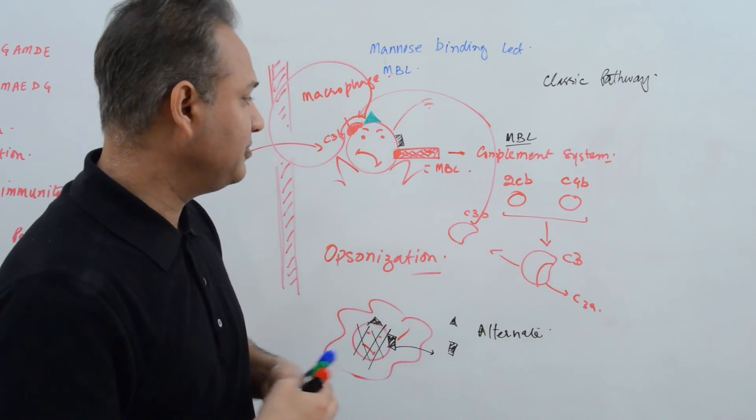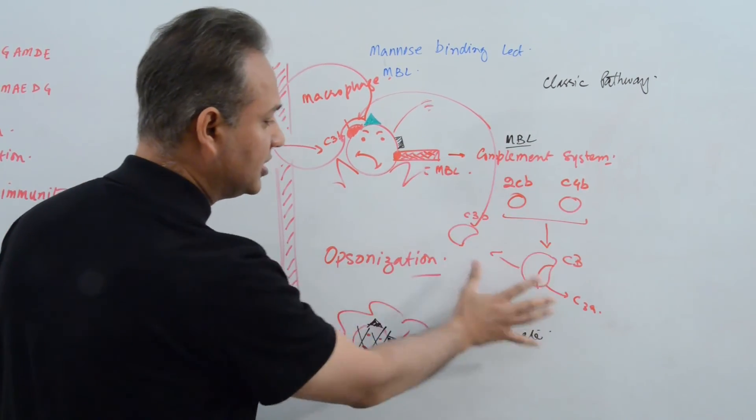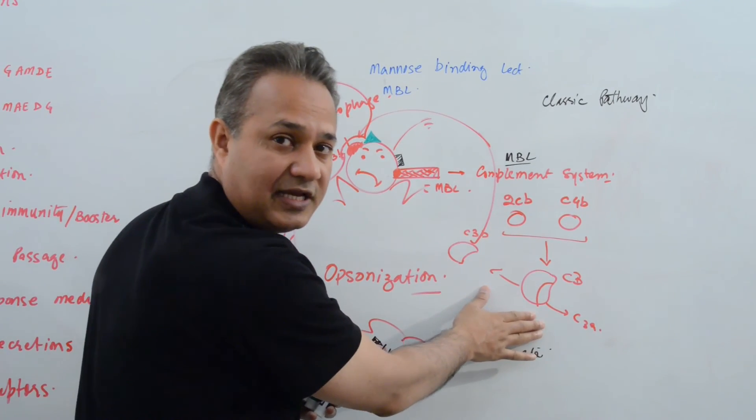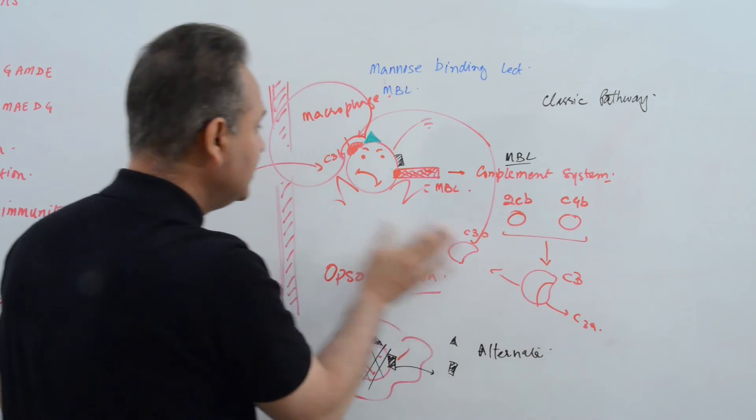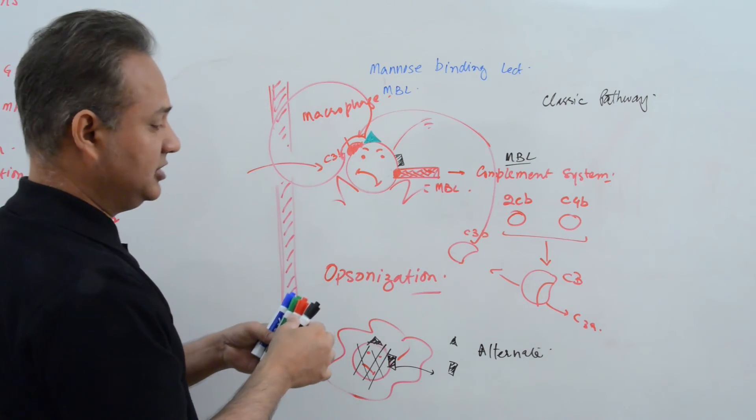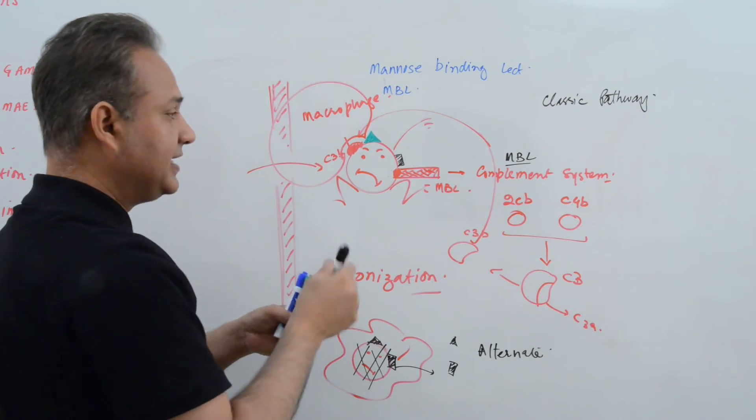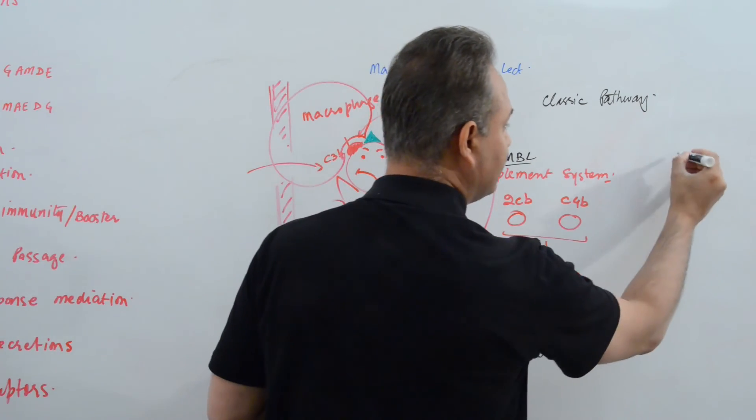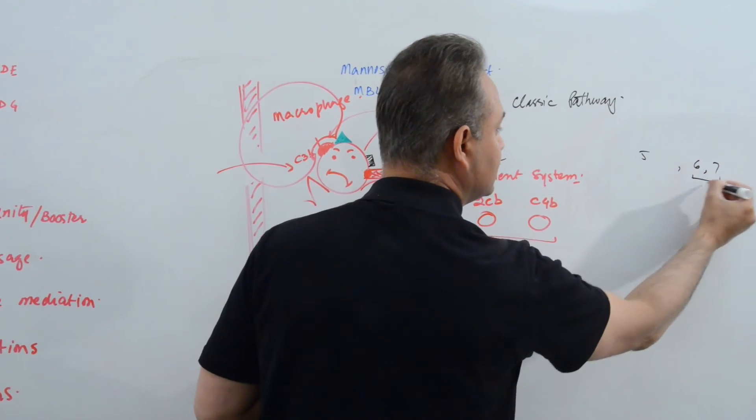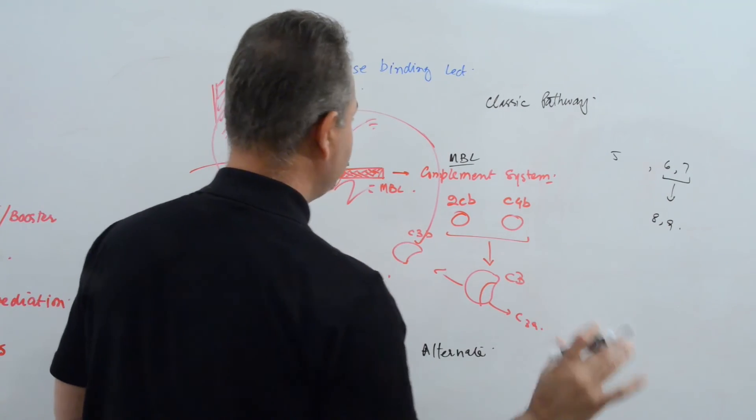Complement fixation simply means this. There are two things. When complement pathway reaches up to C3 and the C3B is created, C3B acts as an opsonin. That is one way. Then what happens is, when the complement pathway continues, it activates 5 and then 6, 7. These two then activate 8 and 9.